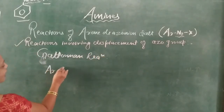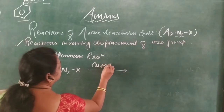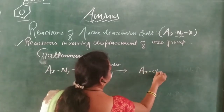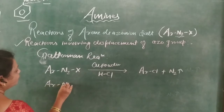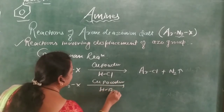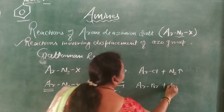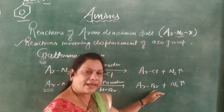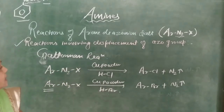In the Gattermann reaction, ArN2X heated with copper powder plus HCl gives ArCl — chlorobenzene. Again, ArN2X heated with copper powder plus HBr gives Ar combined with Br, forming ArBr — bromobenzene — with evolution of nitrogen gas. So aryl chloride and bromide are obtained from a given aryl diazonium salt by the Gattermann reaction.